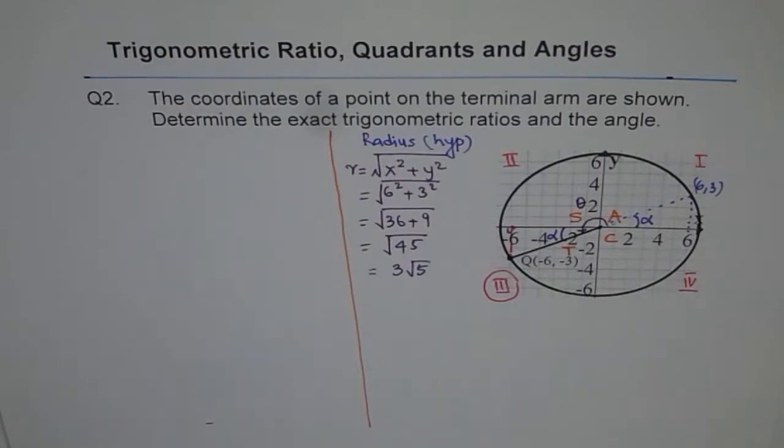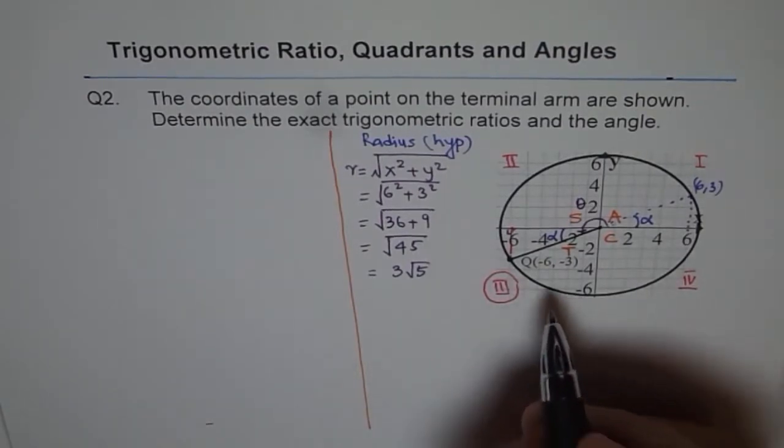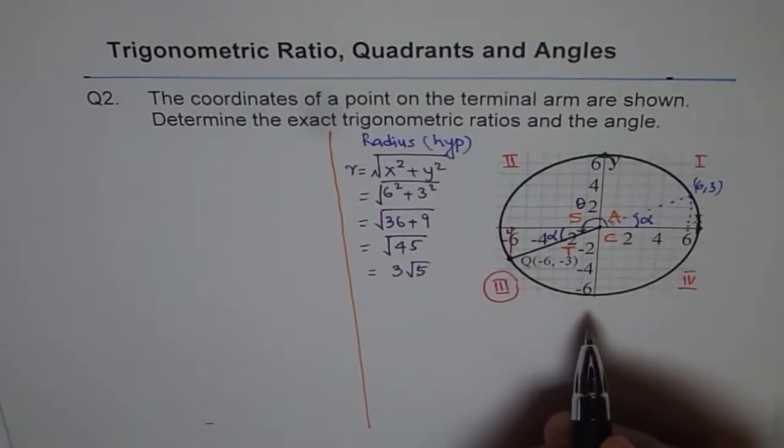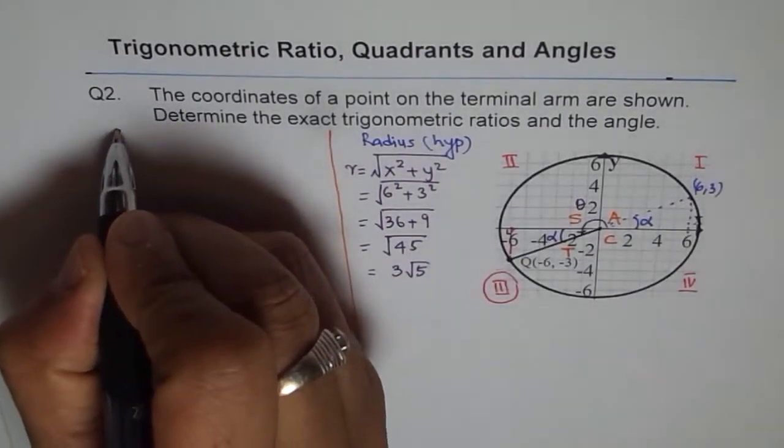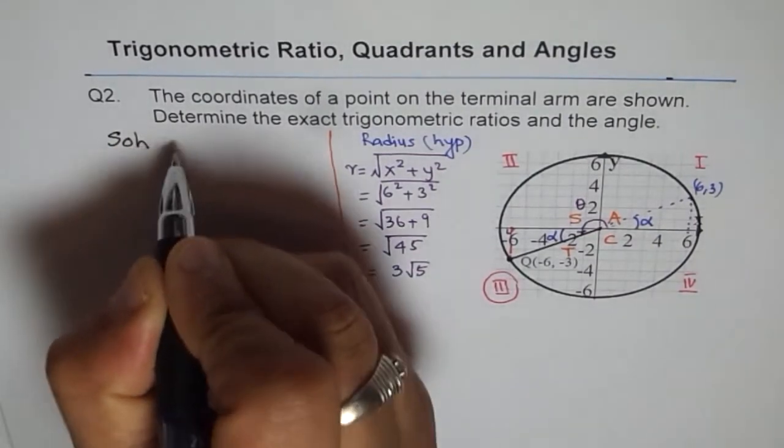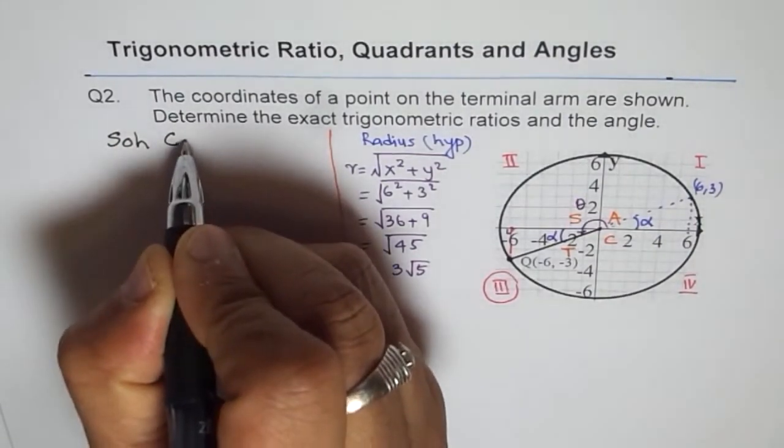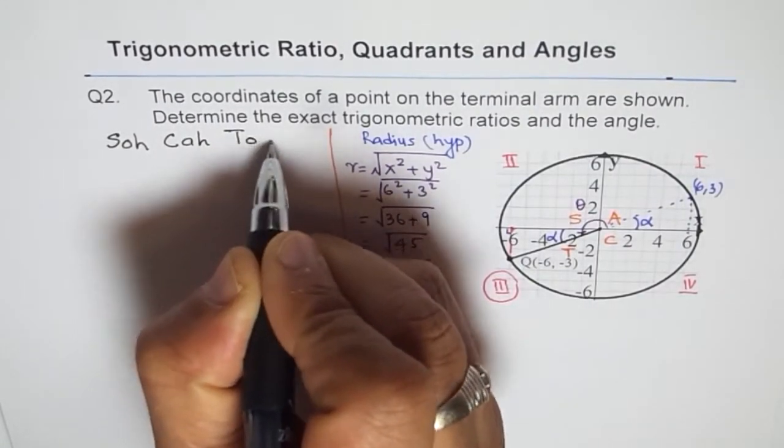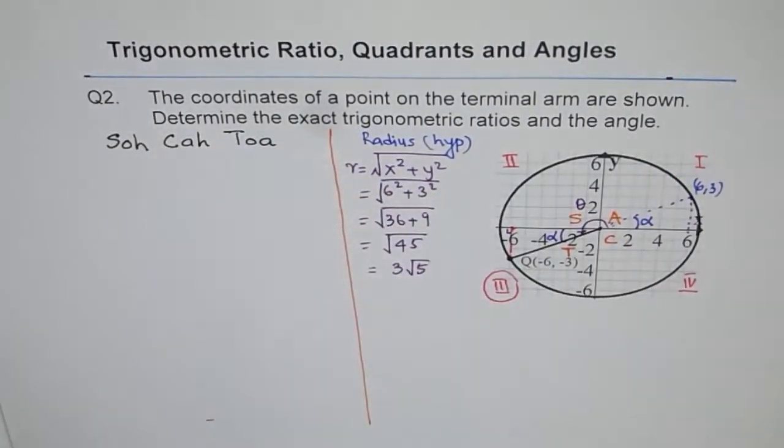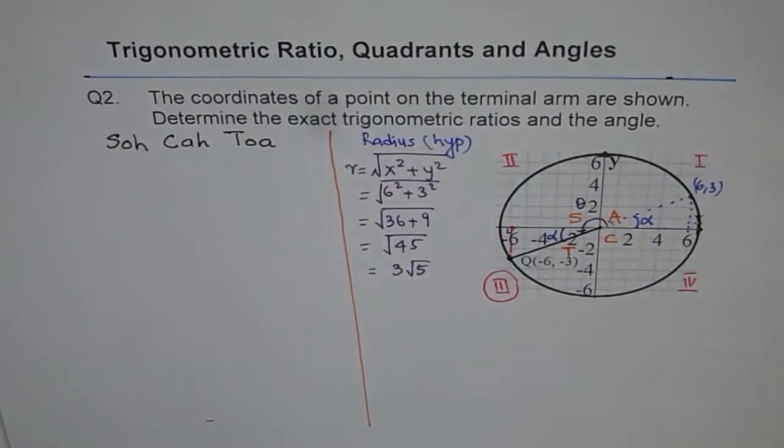We will find all trigonometric ratios first. Since we know r, we know x and y. Now trigonometric ratios, let's figure them out. So let's start with sine. Now you should remember SOHCAHTOA. Let me write down SOHCAHTOA here for you. Sine is opposite over hypotenuse. Cos is adjacent over hypotenuse. And tan is opposite over adjacent. So this is how we are going to find each and every trigonometric ratio.